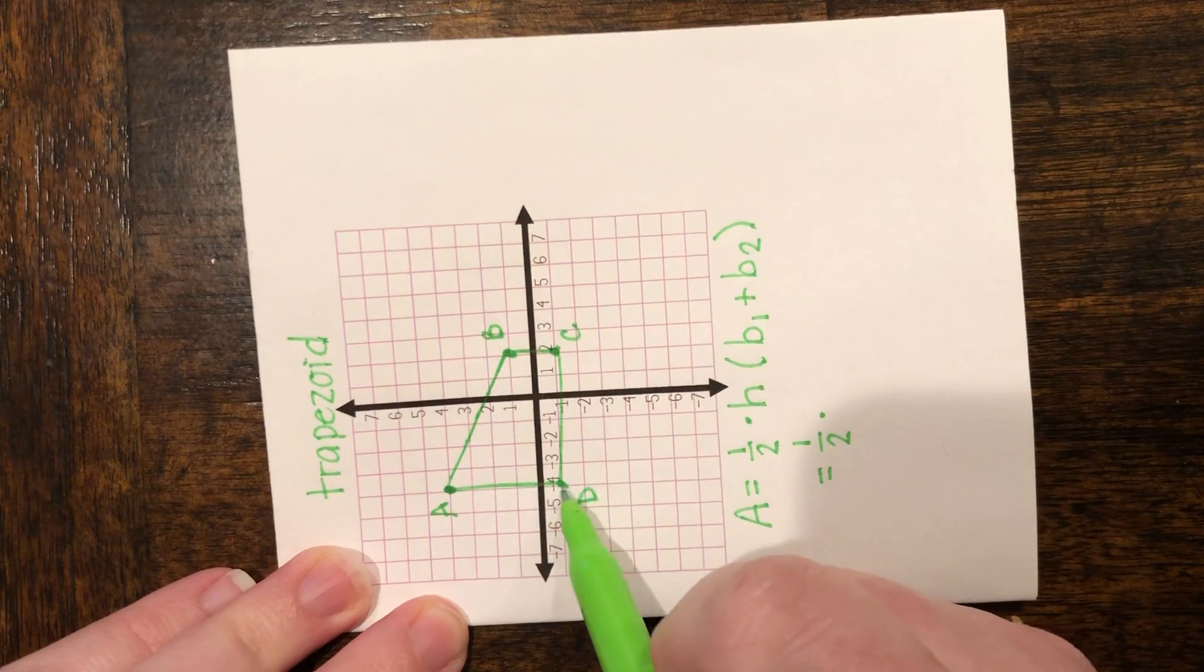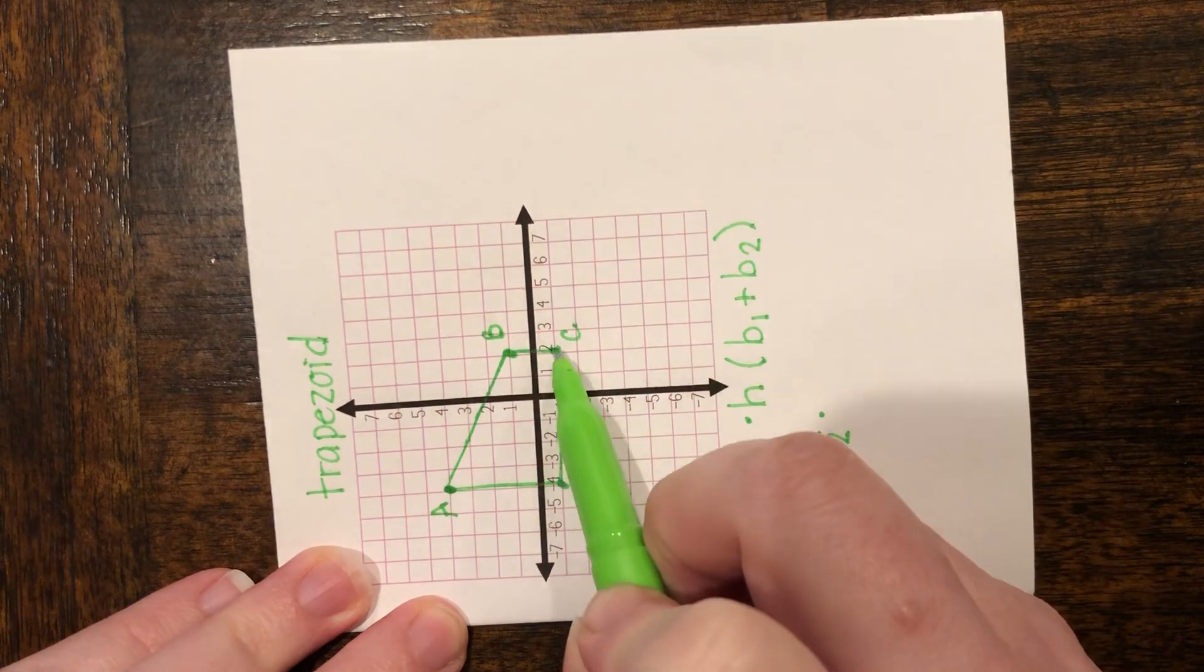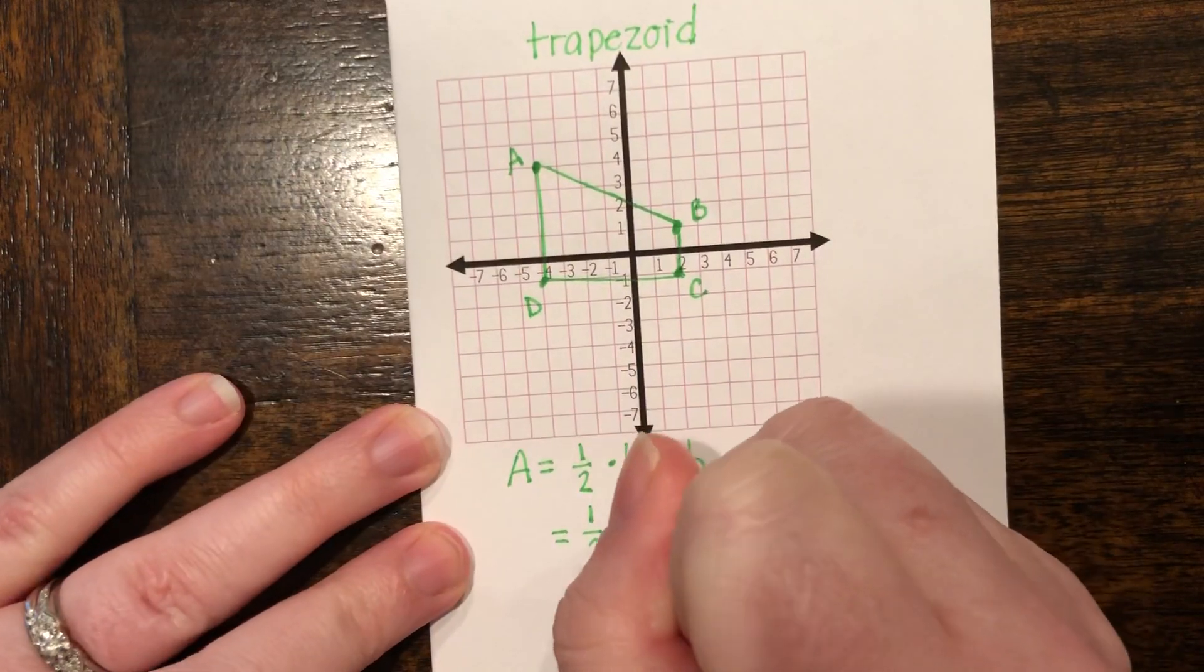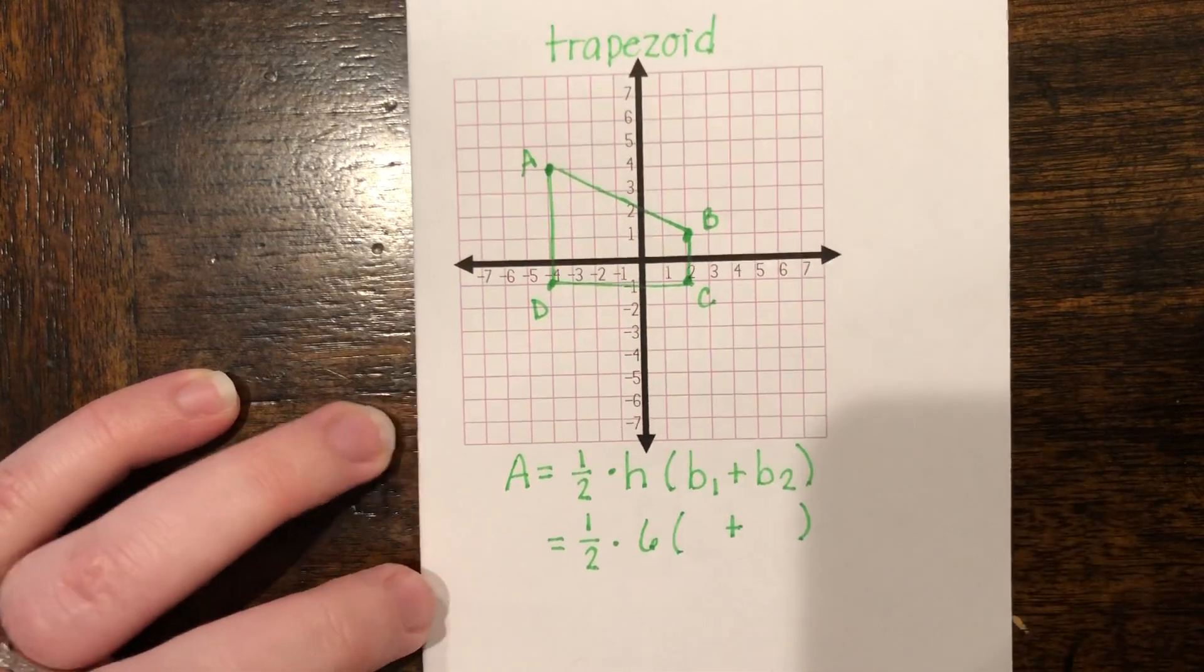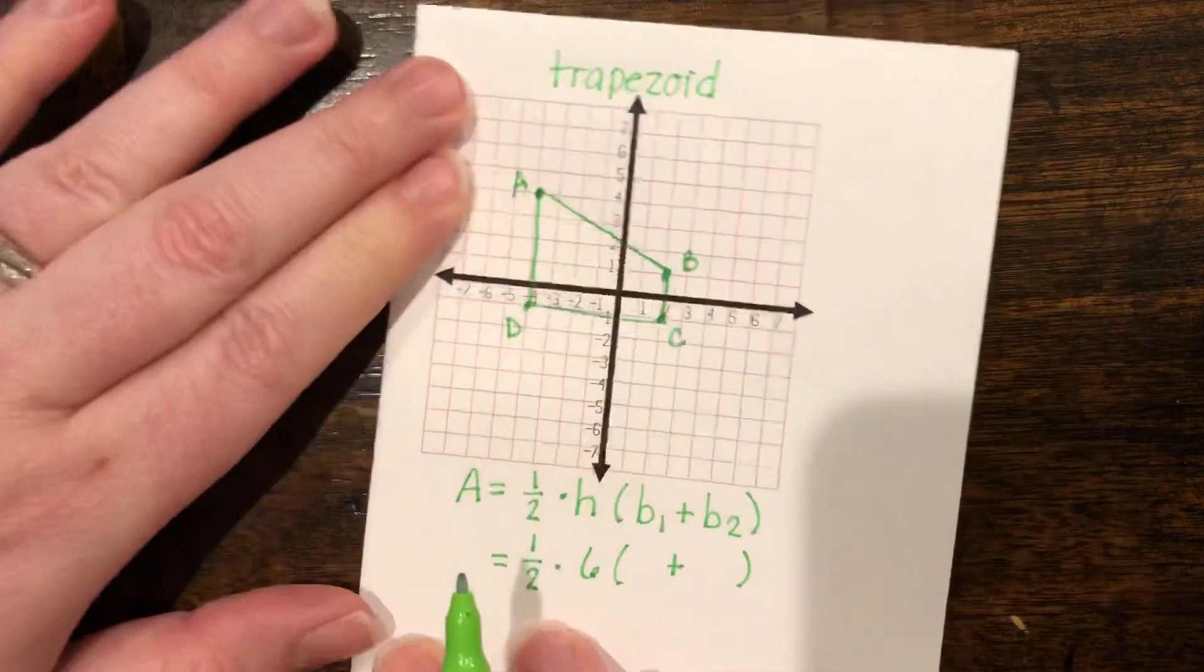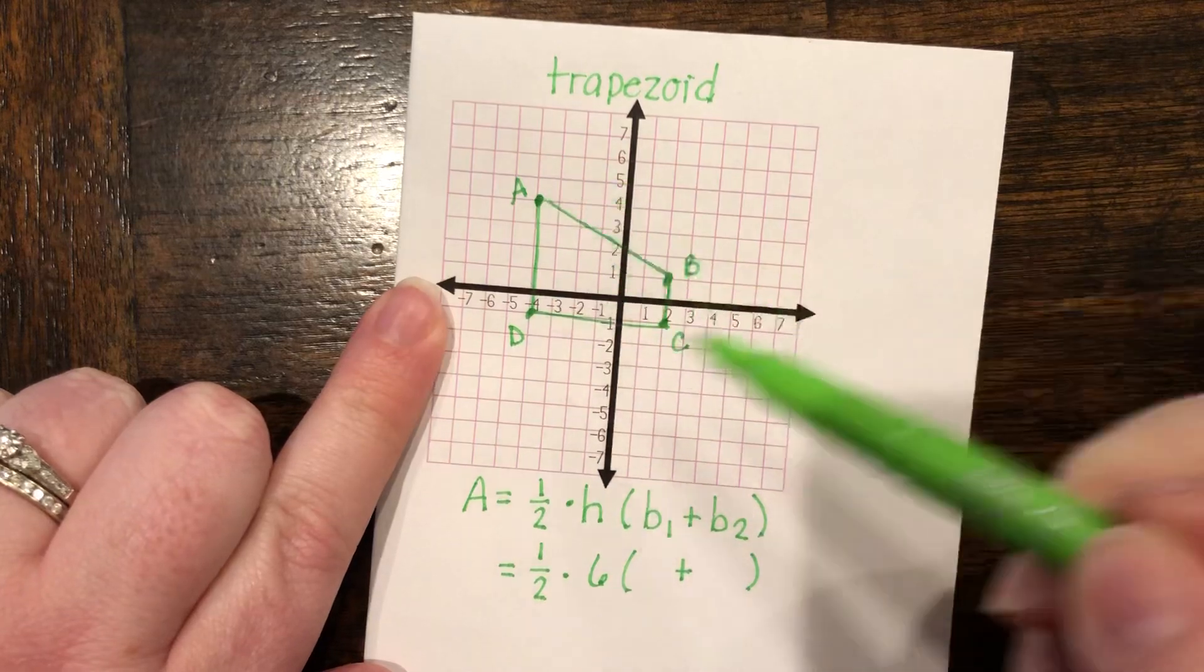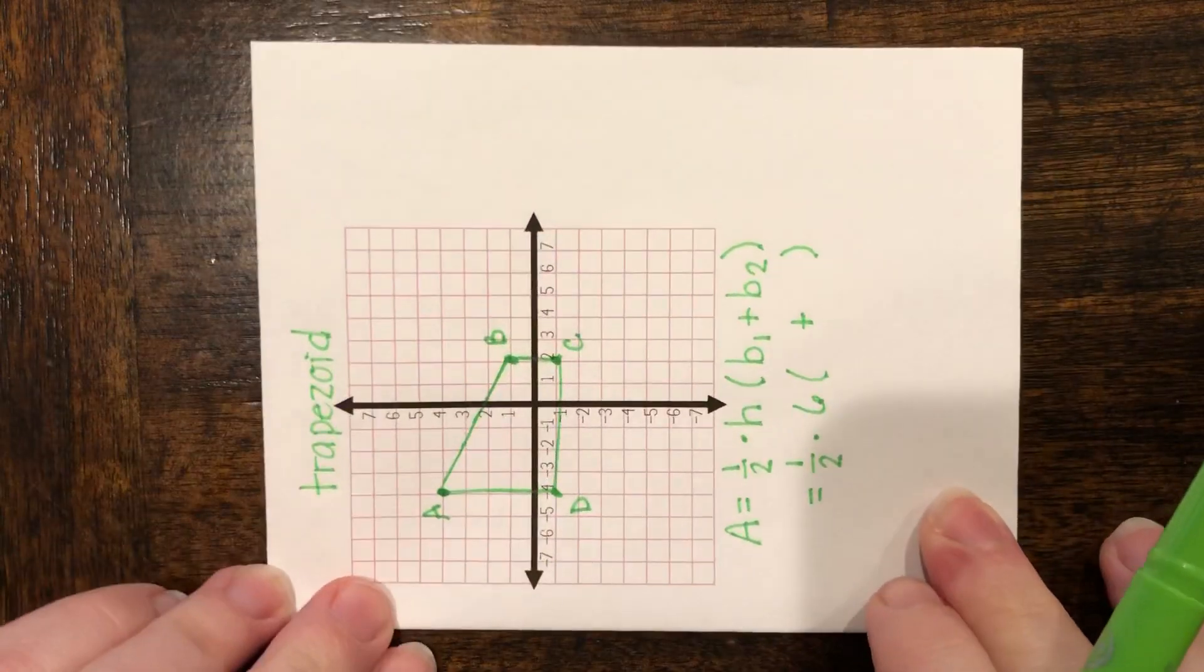So let's start here in the bottom on AD and we'll go 1, 2, 3, 4, 5, 6. So we have 6 units. So our height for this trapezoid is 6. Alright, now let's see what our bases are. Again, I'm going to go ahead and turn it. If you don't want to turn it, if you know that these two are your bases, you can go ahead and start counting right here for your bases. But I'm going to move it back just for those who need that extra visual there.